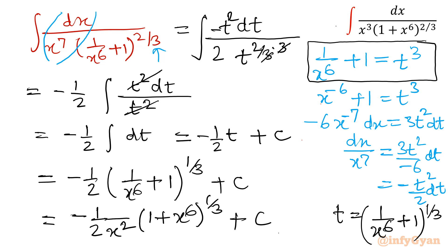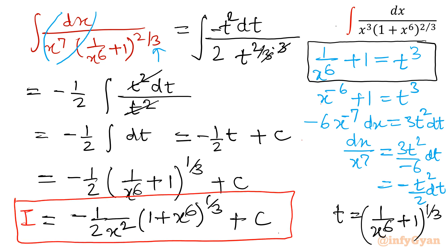This is how we can solve it. Our final answer is I = −1/(2x²) · (1 + x⁶)^(1/3) + C. Thank you so much for watching. If you haven't subscribed to my channel yet, please do subscribe right now — thank you so much for your love and support.